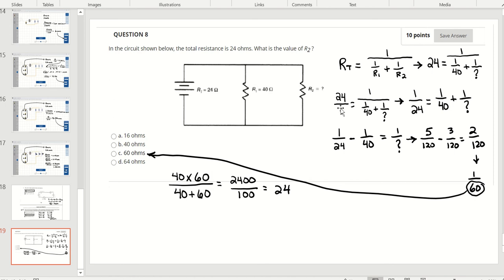Now we can take this formula, 24 over 1, 1 over our two resistors, and flip both sides to come up with 1 over 24 is equal to 1 over 40 plus 1 over our unknown.